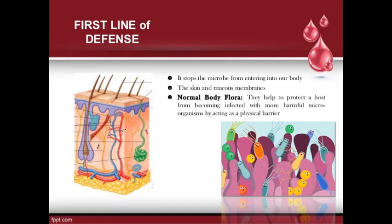First, skin has sweat glands through which sweat is released onto the surface. Second, it has oil glands through which oil is released onto the surface. Sweat provides a high concentration of NaCl on the surface, while oil does not allow microorganisms to adhere to the surface. Third, there is normal flora of microorganisms present on the skin.